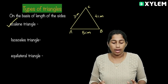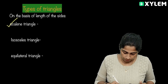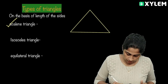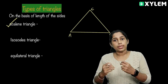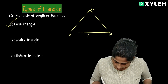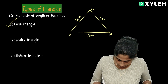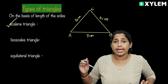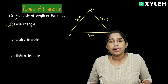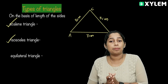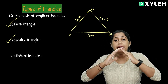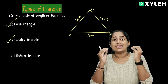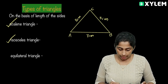We can call it a Scalene Triangle. Now I have another triangle — A, B, C — with 7 cm, 5 cm, and 5 cm. The two sides AC and BC are the same length. This triangle is called an Isosceles Triangle. An Isosceles Triangle has two equal sides.